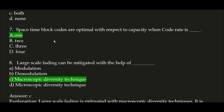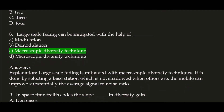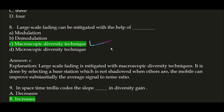Space Time Block Codes are optimal with respect to capacity when code rate is 1. Next question: large-scale fading can be mitigated with the help of — option C is correct — the macroscopic diversity technique. Large-scale fading (LSF) can be mitigated with the help of the macroscopic diversity technique, because it's done by selecting a base station which is not shadowed when others are.